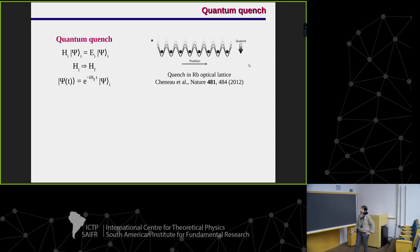First, what a quantum quench is: we prepare the system in a given eigenstate of an initial Hamiltonian, then we change some parameters to get a final Hamiltonian, and we let the system evolve in time according to this final Hamiltonian. This is indeed realized in optical lattice experiments. First they prepare the system in such a way that a barrier is very high, so the system is in a Mott state with one particle per site. Then suddenly they decrease this barrier and observe what happens as a function of time.